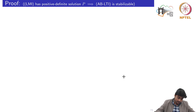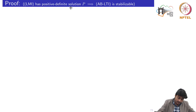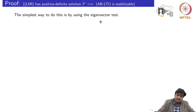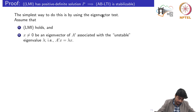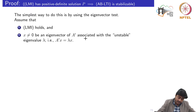Let us see the quick proof for this result. The first implication is that the LMI has a positive definite solution matrix P, which implies that the pair A-B is stabilizable. We would be using the eigenvector test to prove this part. There are two assumptions: first, the LMI has a positive definite solution P, meaning the LMI holds. Second, there is a nonzero vector x which is the eigenvector of A-transpose associated with the unstable eigenvalue lambda, that is A-transpose x equals lambda x.